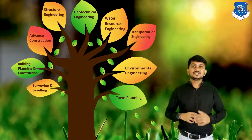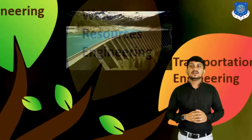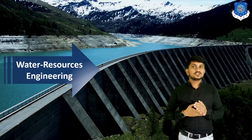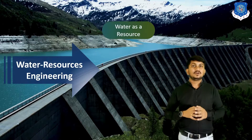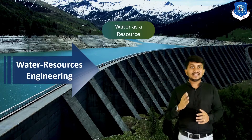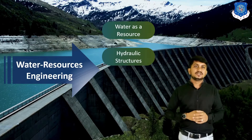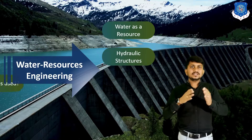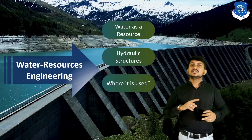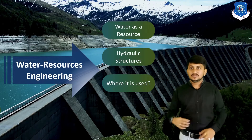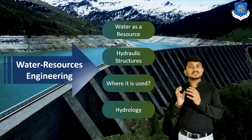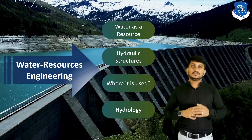Now let's discuss the branch Water Resource Engineering in detail. Water resource engineering deals with the measurement, utilization, distribution and development of water resources for agriculture, municipal and power generation purposes. It includes planning, designing and construction of hydraulic structures such as dams, weirs, bridges, canals, hydropower stations, and pipe networks. Hydrology is a sub-branch of water resource engineering and includes the study of sources of water, measurement of rainfall, runoff, and flood control.